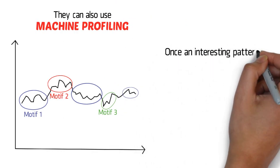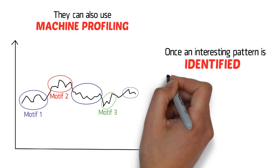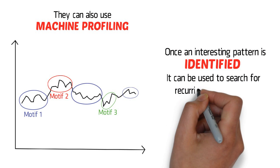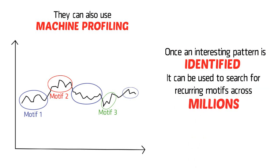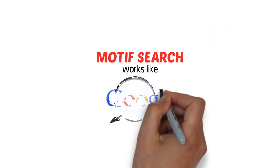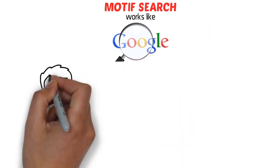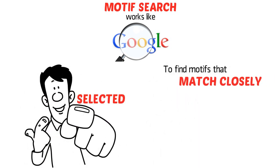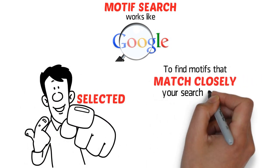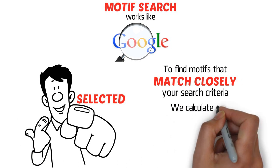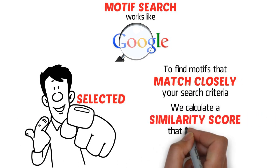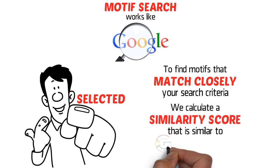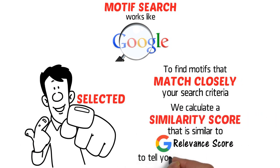Once an interesting pattern is identified, it can be used to search for recurring motifs across millions of time series. Motif Search works like Google Search — we use a pattern selected by you to find motifs that match closely your search criteria. We calculate a similarity score that is similar to Google's relevance score to tell you how close the match is.